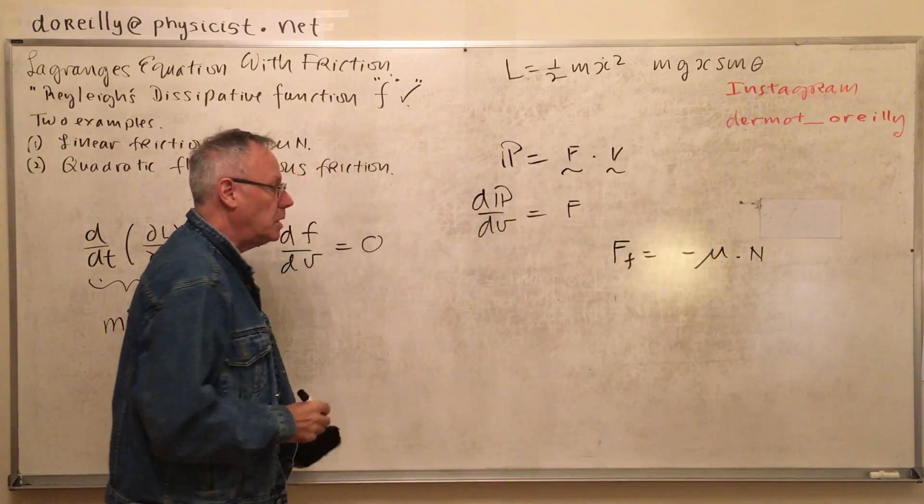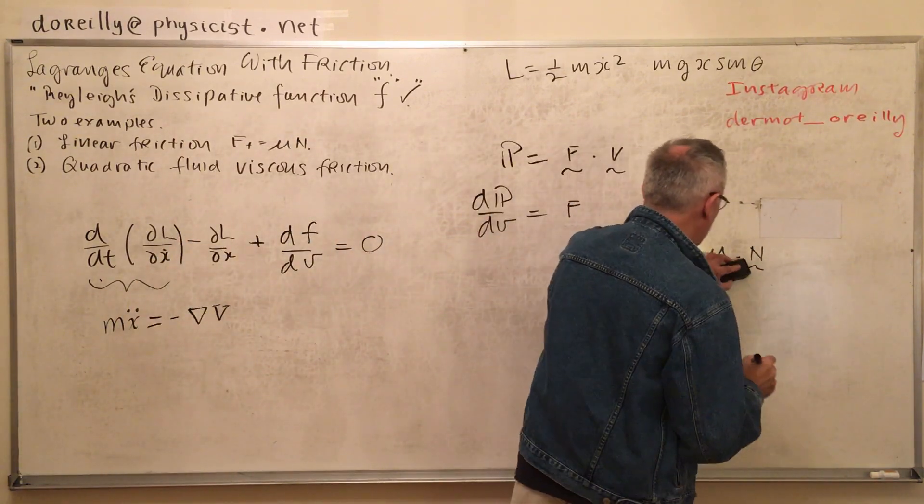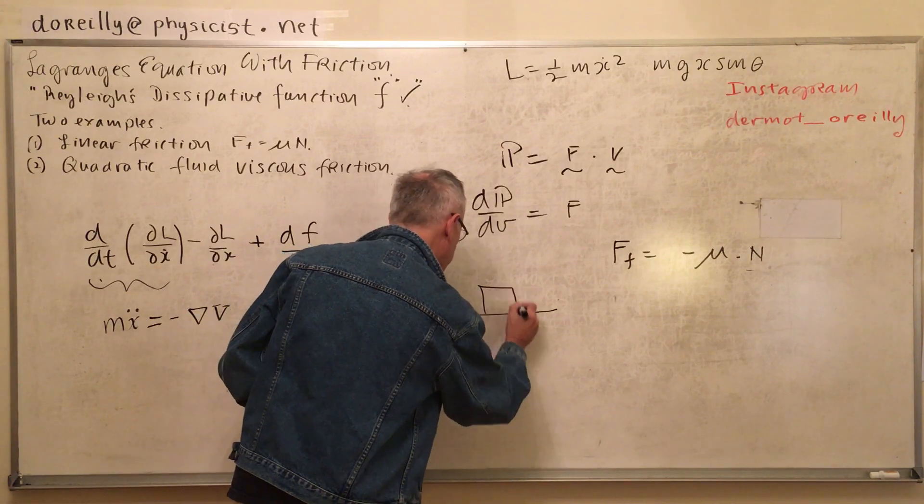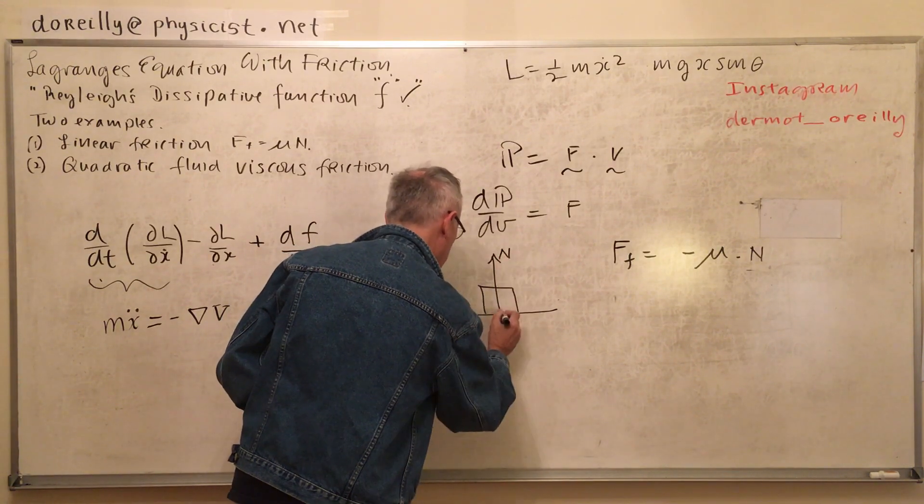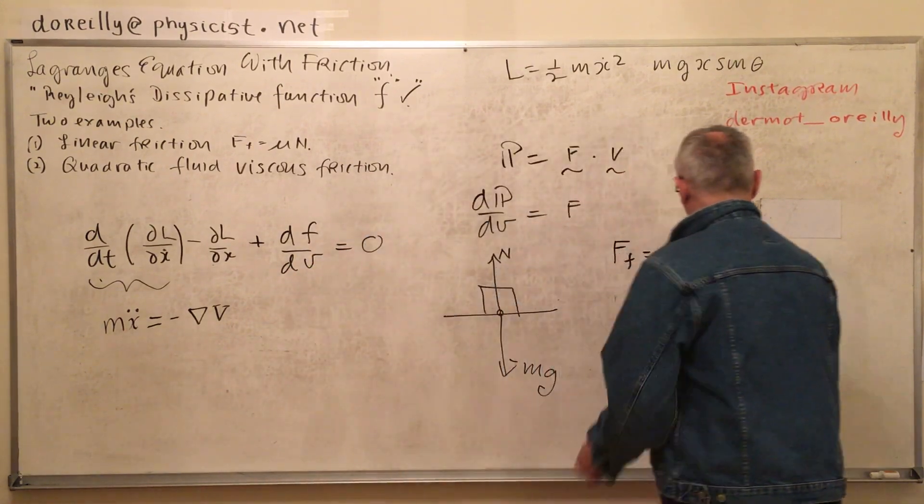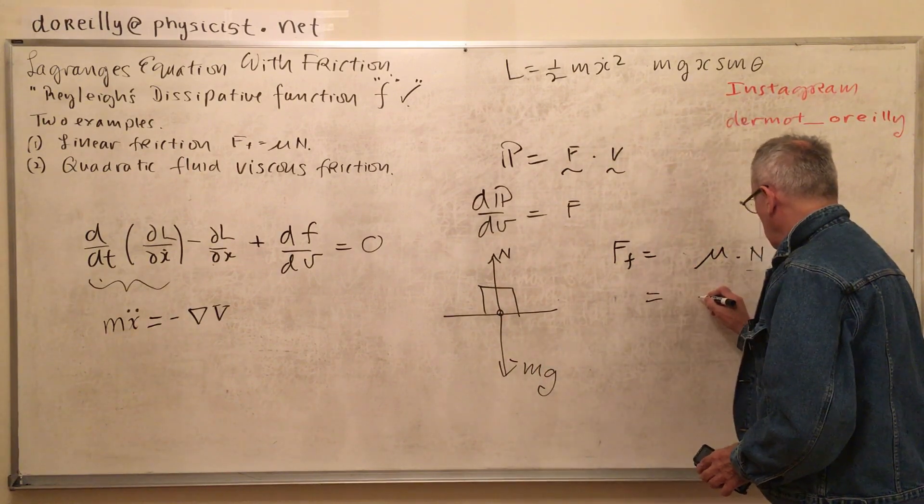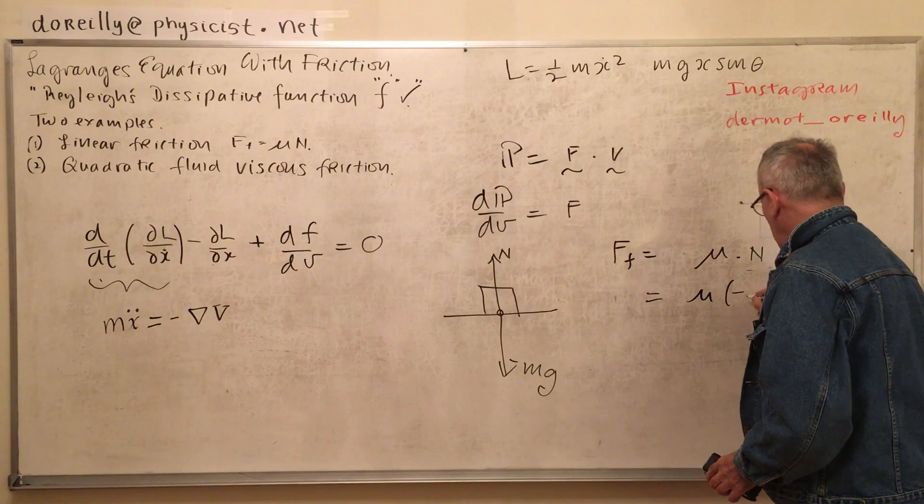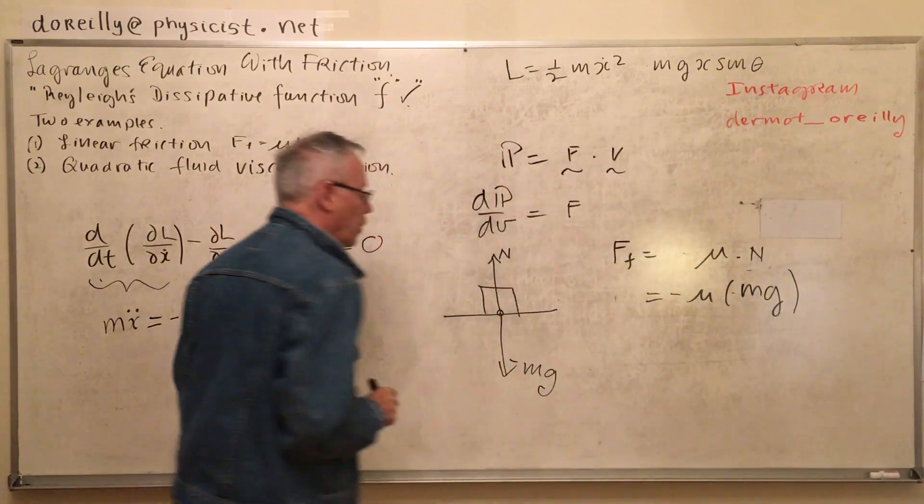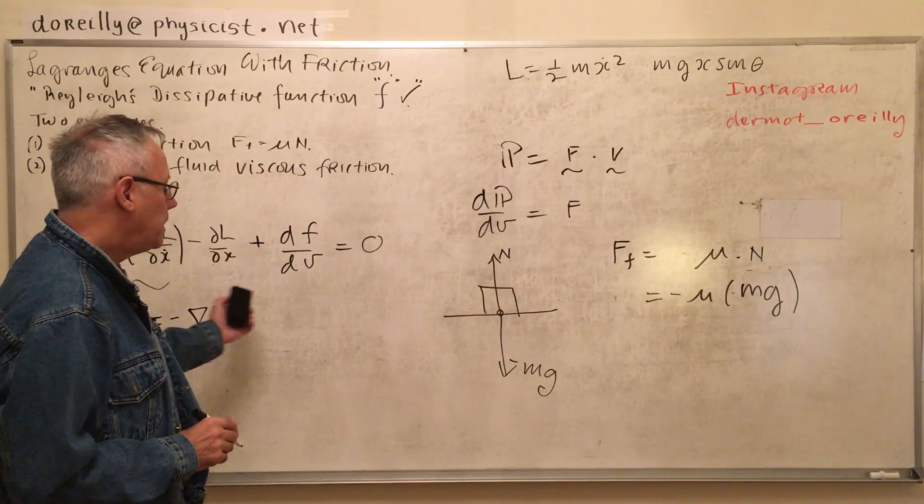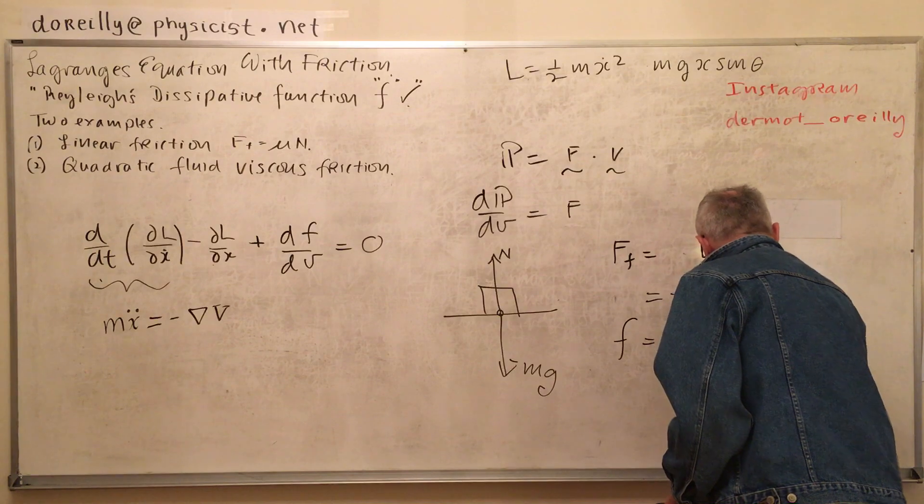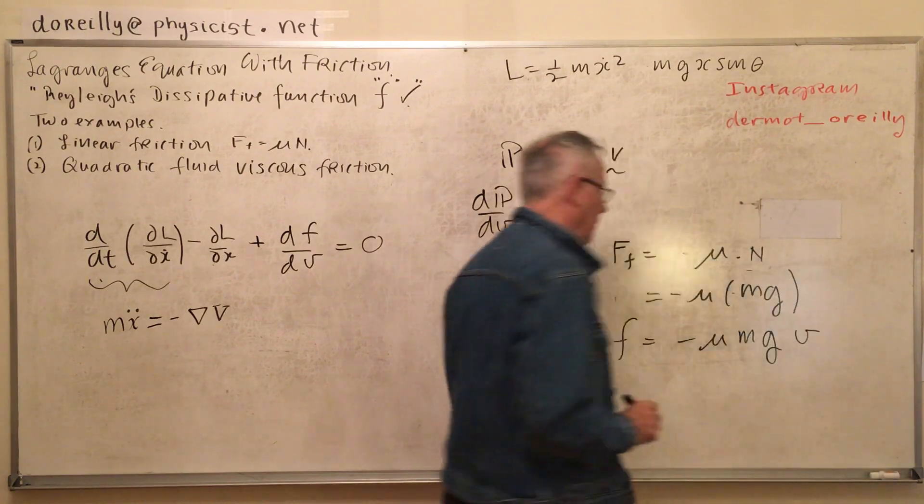What does it look like? In the case of ordinary friction, friction is proportional to the normal. In the case of a mass on the surface, the normal is equal to mg. That would be the friction force.